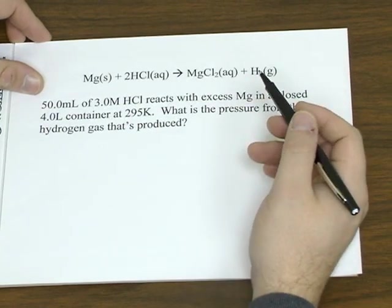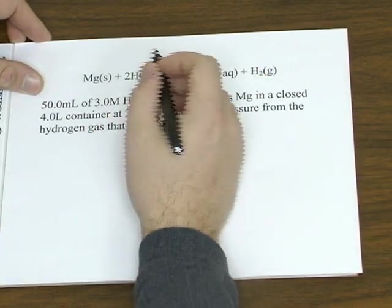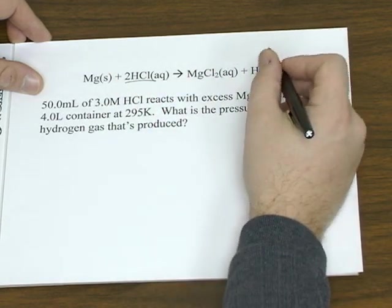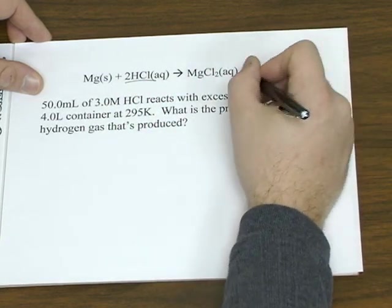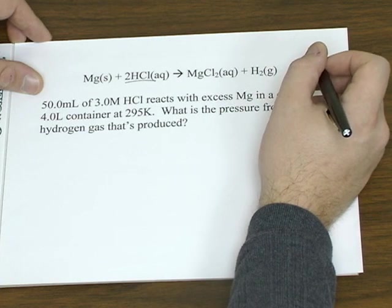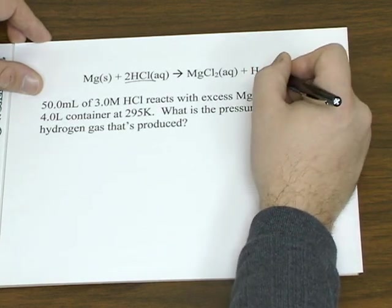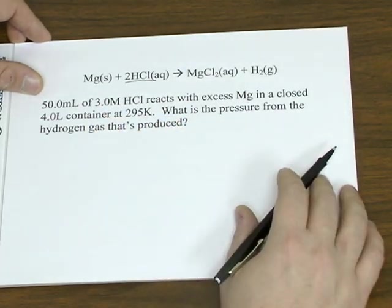So right off the bat, this is a stoichiometry problem because you're given a known amount of one substance and you're trying to find some other amount of another. In this case, we want to know how much pressure is given off from the hydrogen gas that's produced in this reaction.